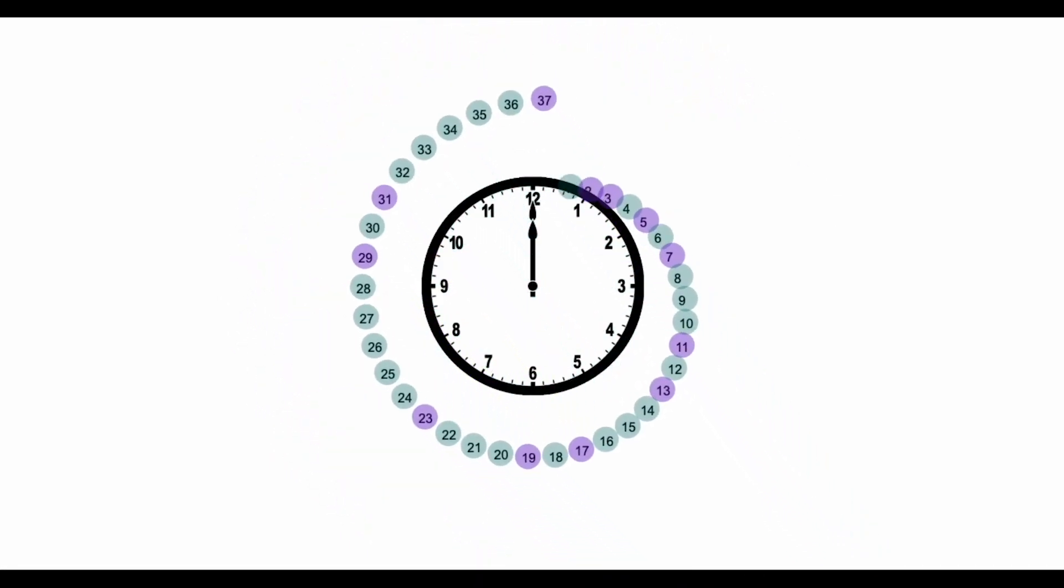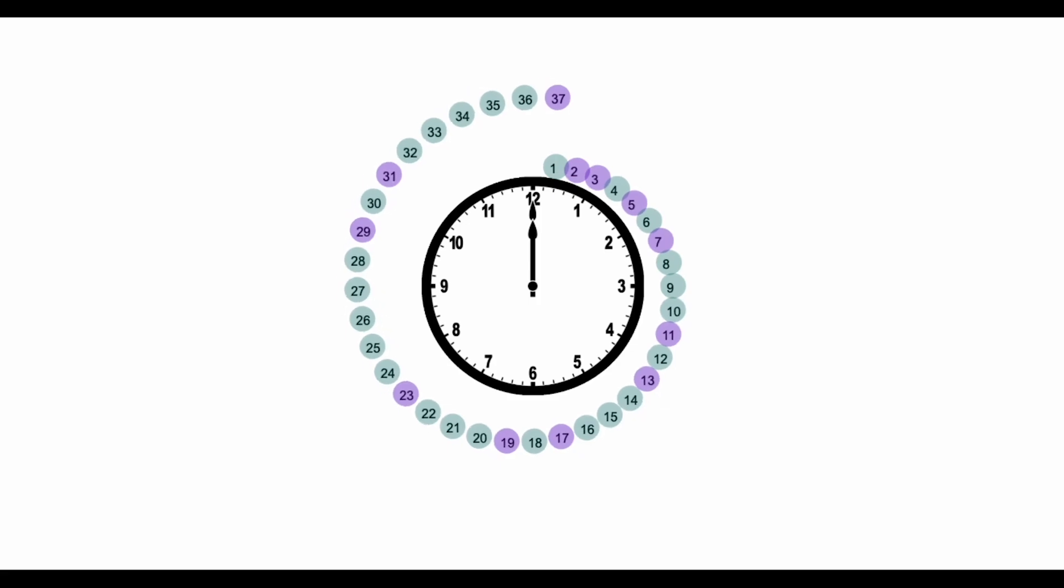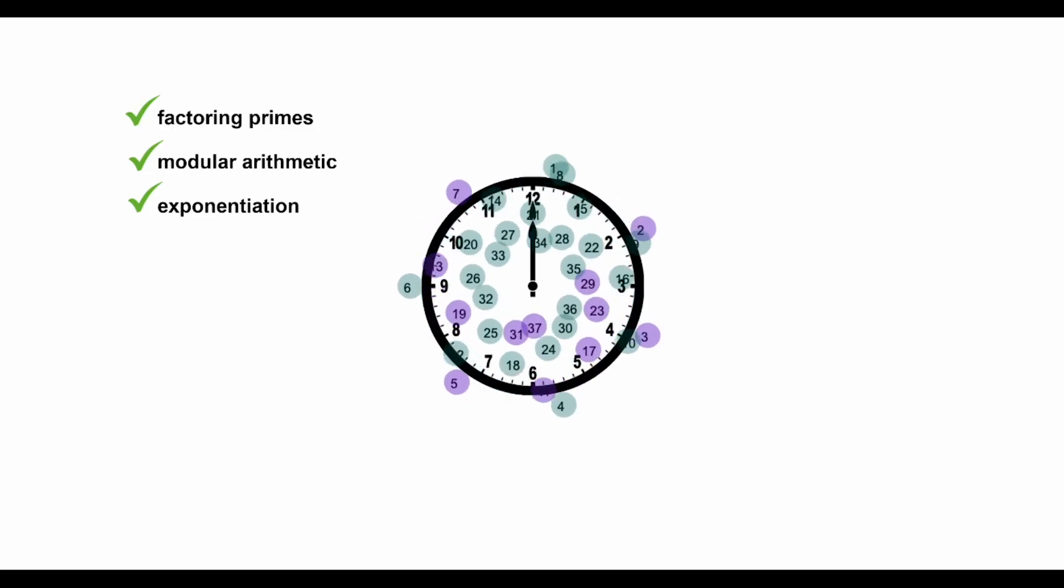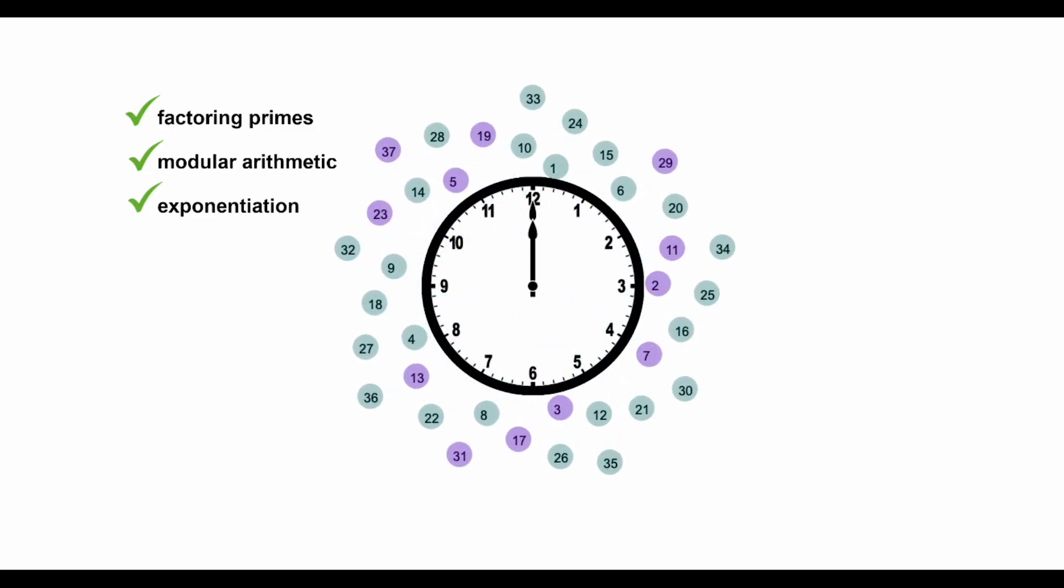We can also take exponential jumps around a clock for even more scramble power. If you think it's difficult to guess what time it would be exactly 37 hours from now, imagine trying to guess what time it would be if you jumped around the clock 37 times, but each jump was longer than the last one.